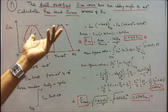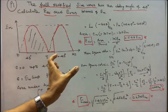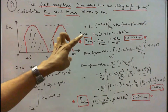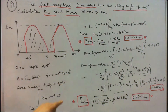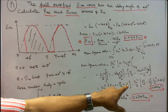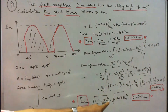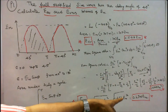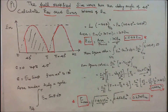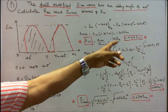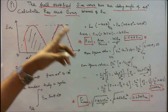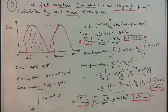The mean square value equals 1.428 EM squared. The RMS value equals the square root of the mean square value divided by the period. Root of 1.428 EM squared divided by pi equals root of 0.454 EM squared, which equals 0.674 EM. Therefore, the full rectified sine wave with a delay angle of 45 degrees has an average value of 0.543 EM and RMS value of 0.674 EM.